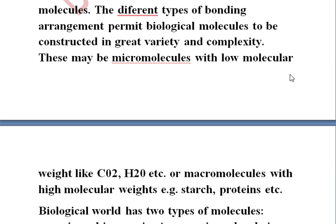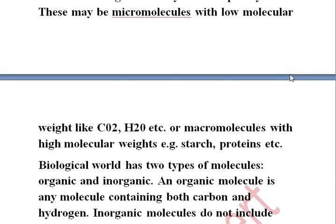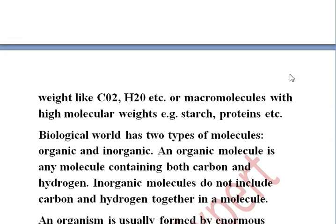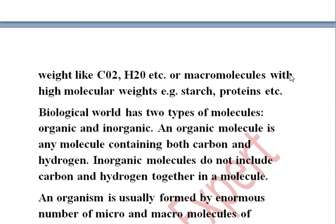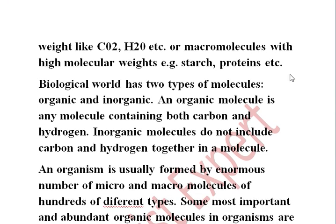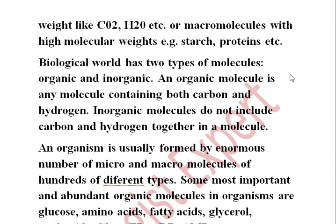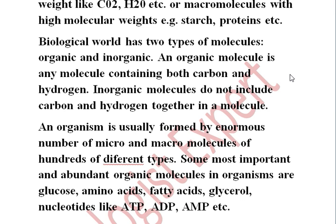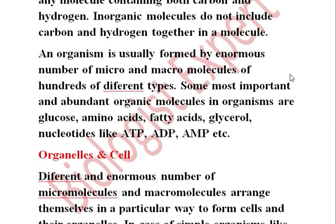Macromolecules include protein and nucleic acid. The biological world has two types of molecules: organic and inorganic. An organic molecule is any molecule containing both carbon and hydrogen, while an inorganic molecule does not include carbon and hydrogen together. An organism is usually formed from a huge number of micro and macromolecules. The most important organic molecules in an organism are glucose, amino acid, fatty acid, glycerol, and nucleic acids like ATP, ADP, and AMP.